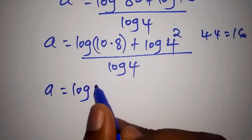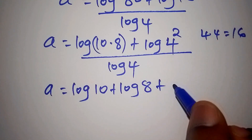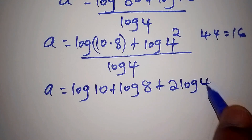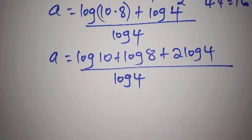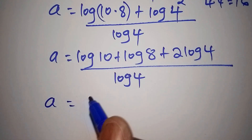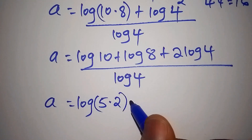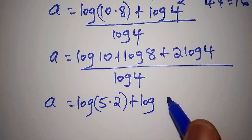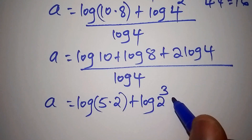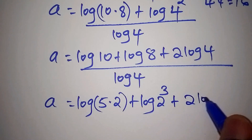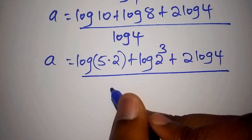So we shall have the log of 10 plus the log of 8, plus the log of 4 to the power of 2, which can be written as 2 times the log of 4, all over the log of 4. The log of 8 can be written as the log of 2 to the power of 3, since 2 times 2 times 2 equals 8.